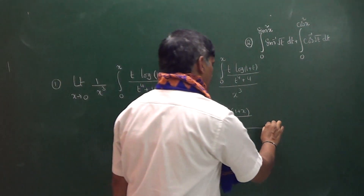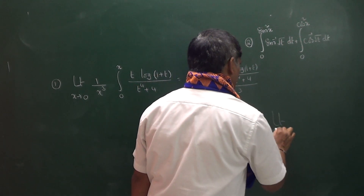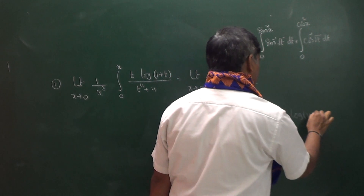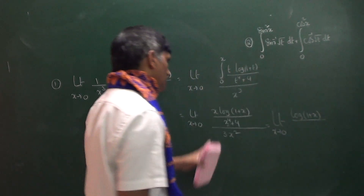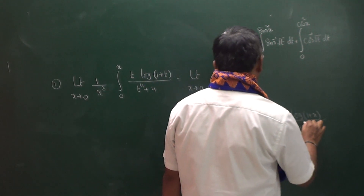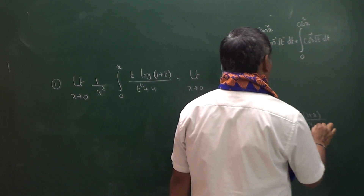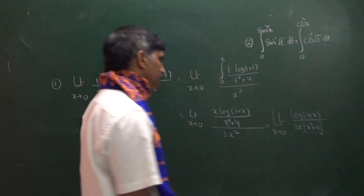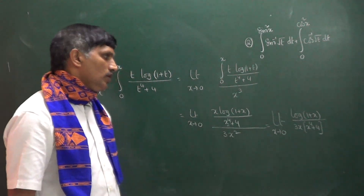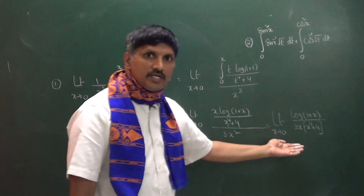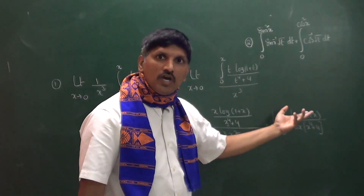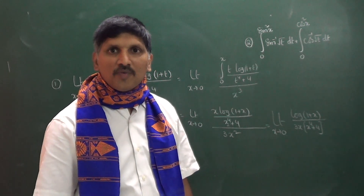After further simplification, this can be written as: limit x tends to 0 of ln(1 + x) divided by [3x · (x⁴ + 4)], because the x in the numerator cancels with one x from the denominator. Applying the limit by substituting x = 0, we again get a 0/0 form.